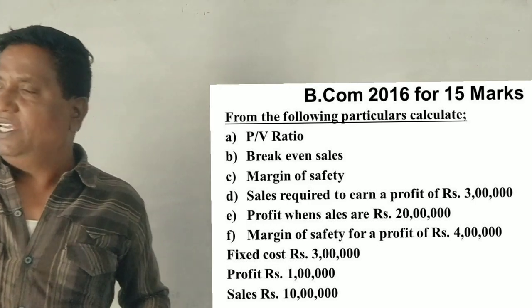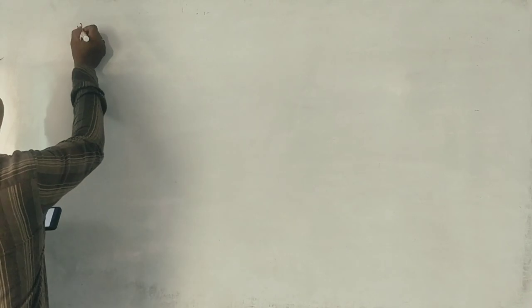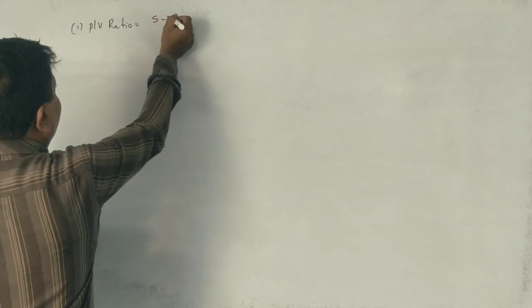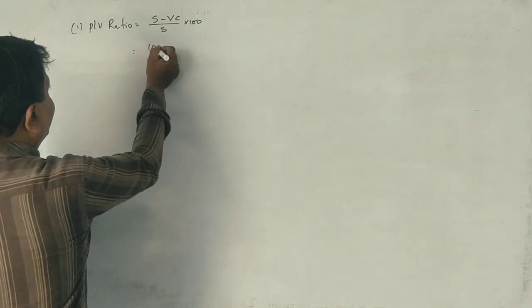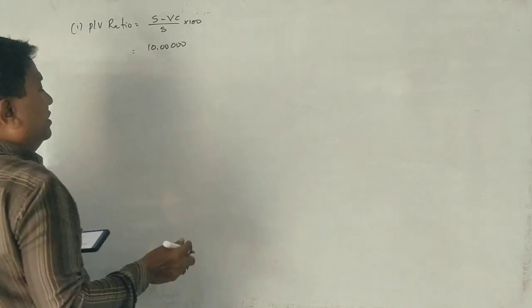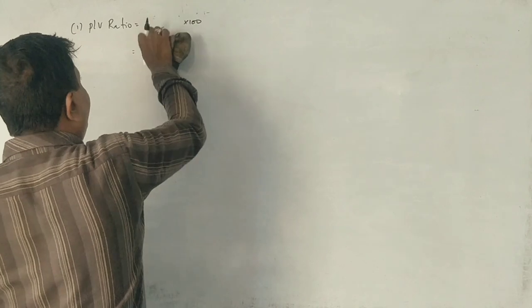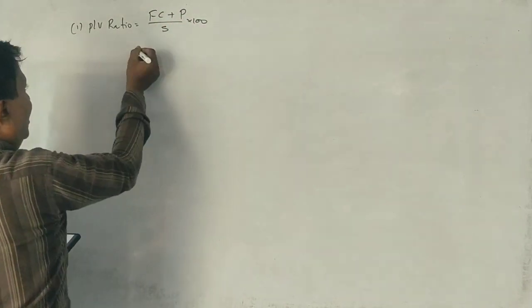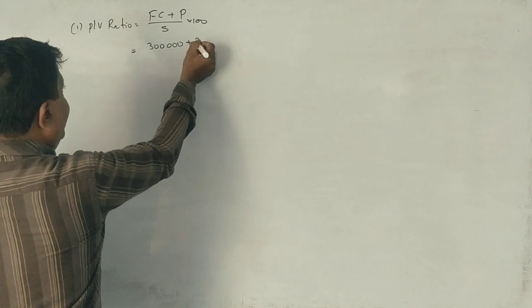This information put it on. This is a straight question. First, P/V ratio. P/V ratio is equal to sales minus variable cost divided by sales into 100. Sales is equal to 10 lakhs. Now, in this question, we have variable cost. Variable cost, fixed cost, profit, sales. Profit and sales are 3 lakhs. Fixed cost is 3 lakhs. Profit 2 lakhs.